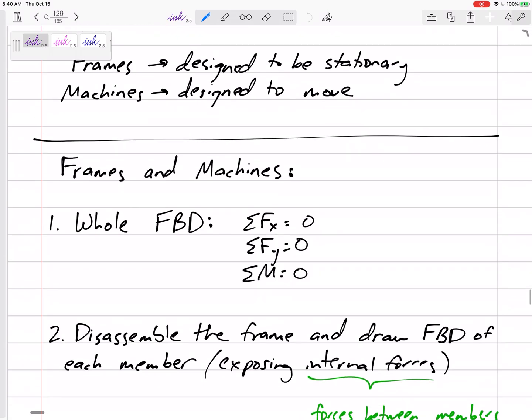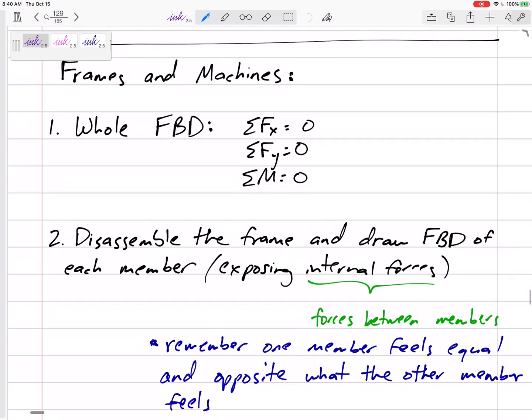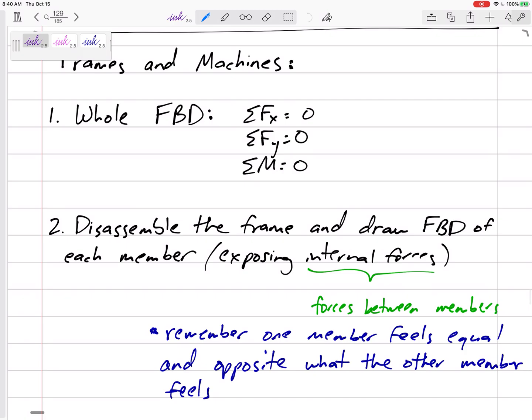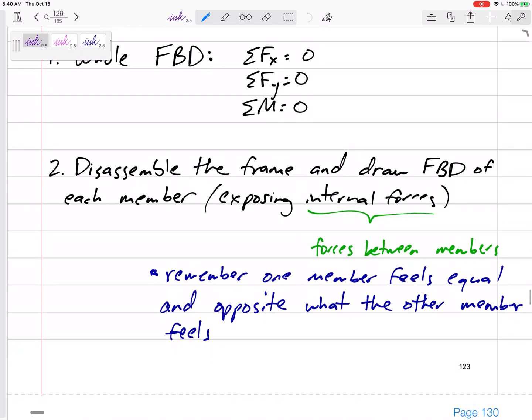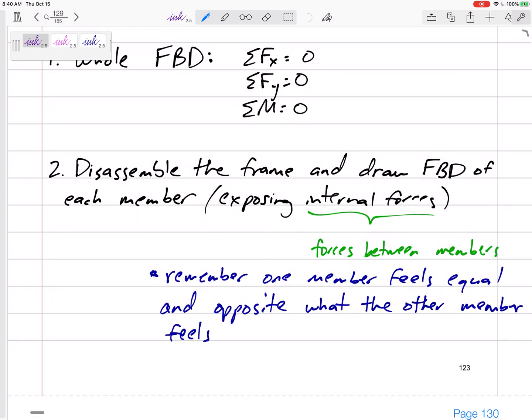And then once we do that, when we were looking at trusses, we could look at a joint or cut it and look at a section. For frames and machines, what we can do is look at one member by itself. So we can look at the whole free body diagram, then look at one member by itself, kind of take it apart.